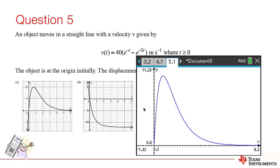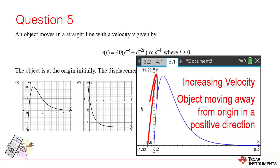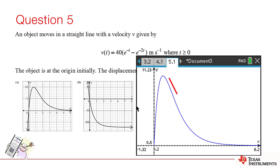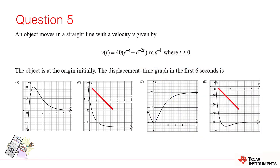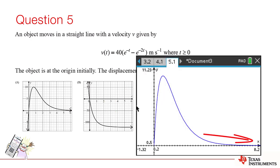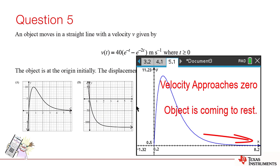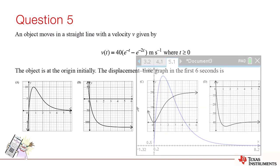We can see that the object moves away from the origin rapidly and in a positive direction. Graphs B and D, therefore, have the object moving in the wrong direction. As time progresses, the velocity approaches 0, so our object is coming to rest, its position barely changing. This is represented by graph C.